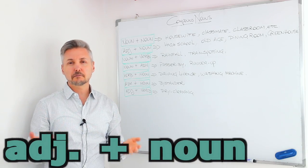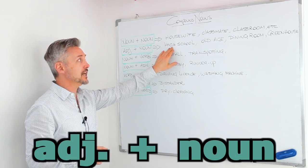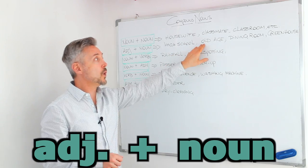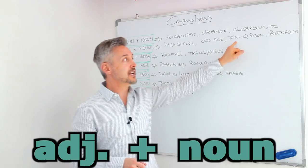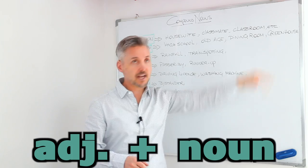Then we have adjective plus noun. For example, high school, old age, dining room, green house.